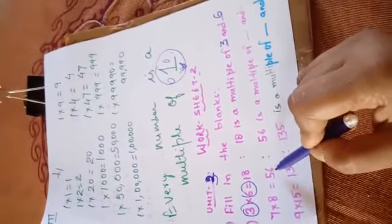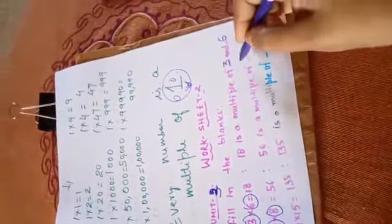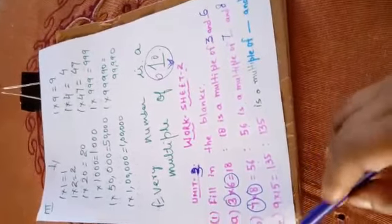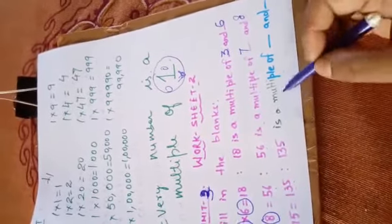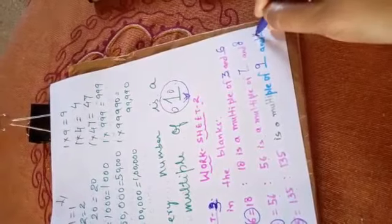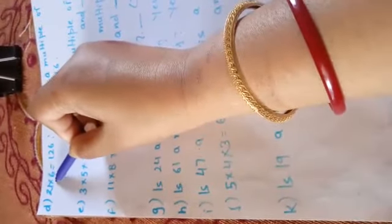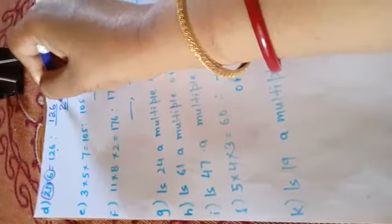C: 9 times 15 is 135, so 135 is a multiple of 9 and 15. D/E: 21 times 6 is 126, so 126 is a multiple of 21 and 6.